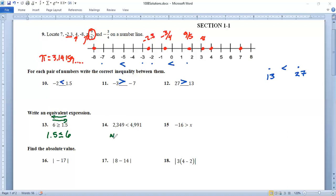So on this one, we have 4,991 is bigger than 2,349. Those are the same statement. If negative 16 is bigger than some number X, but we don't know what it is, that means that X is smaller than some number 16. And these mean the exact same thing.